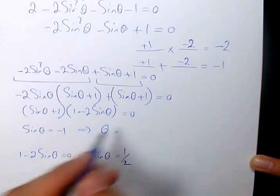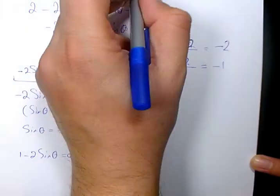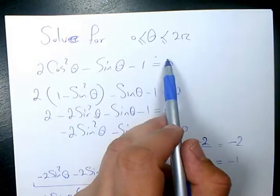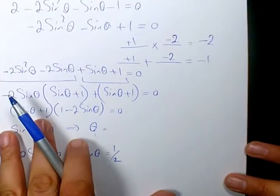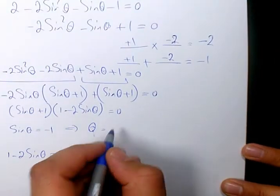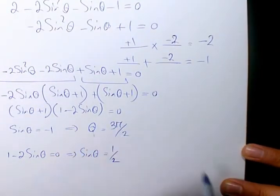For the first scenario, what angle theta makes sine theta equal to negative 1? From 0 to 2π there is only one answer, which is 3π over 2, or 270 degrees.